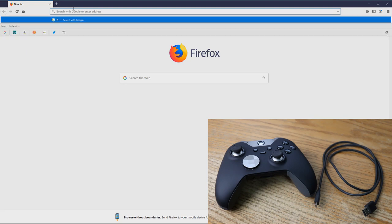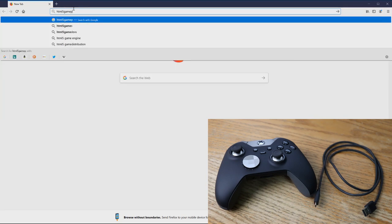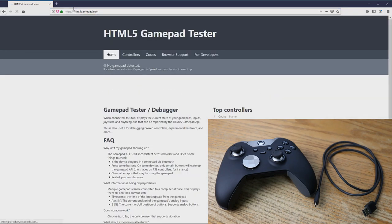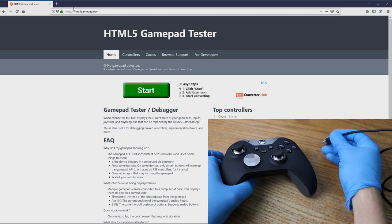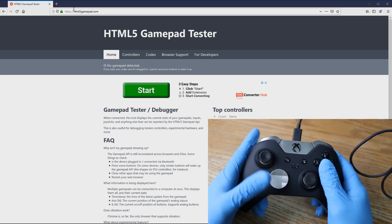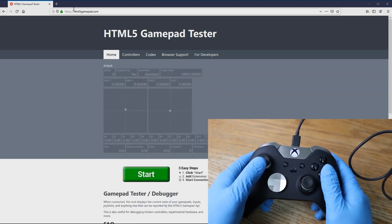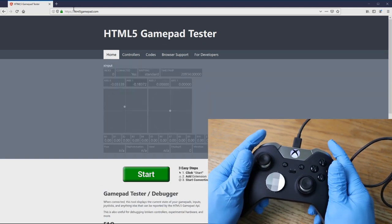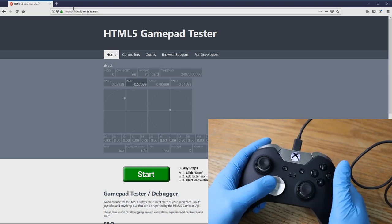First, I'm going to open up html5gamepad.com on the computer. Then I'm going to grab the micro USB cable and connect the USB side to the computer and the micro USB side to the controller. Then just press any button. As you can see this controller has stick drift on the left analog stick without doing anything to it, so this is obvious cause for replacement.